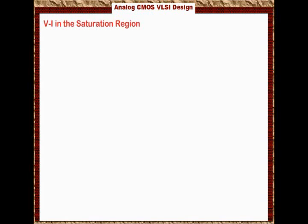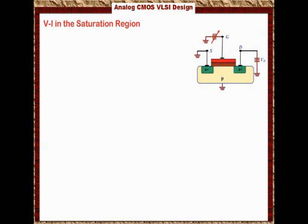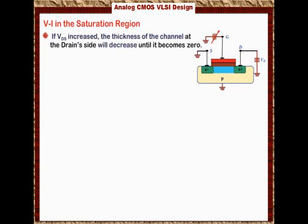In order to do that, let us show you the 2D layout of the transistor first, and then we're going to create a channel by applying Vgs. So here is the channel created. Now if Vds is increased, the thickness of the channel at the drain side will decrease until eventually it becomes 0. So we're going to increase Vds, and by increasing Vds, the thickness of the channel at the drain side will decrease.